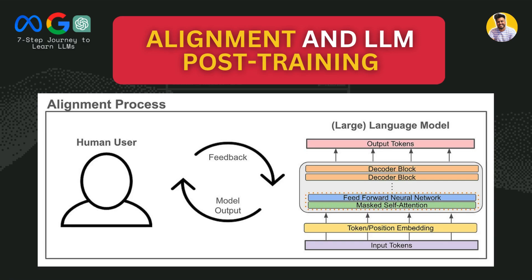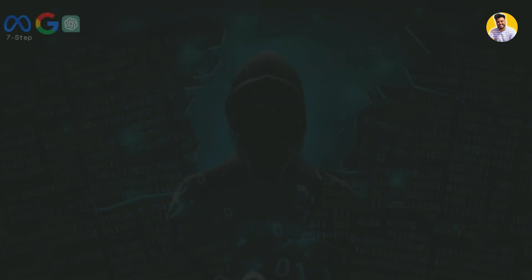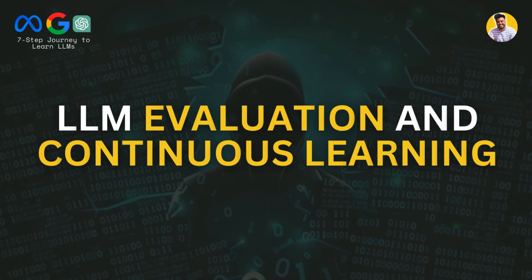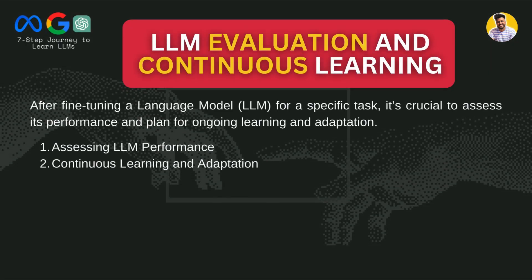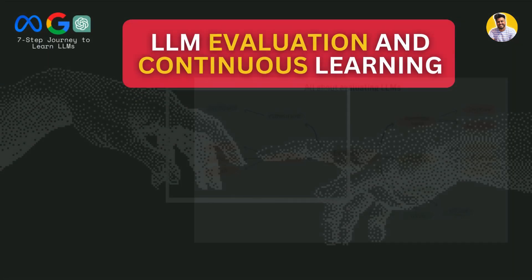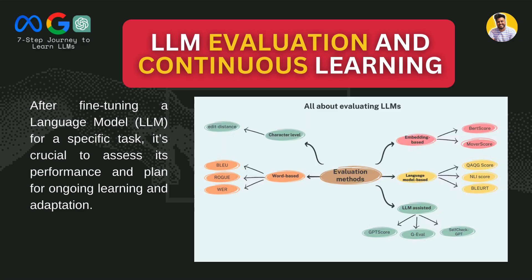The next step is how to evaluate and do continuous learning on large language models. Since large language models are built for specific tasks, it is crucial to assess their performance and plan for ongoing learning and adaptation, which requires enormous resources. After fine-tuning, evaluation is based on your specific task. If your LLM is embedding-based, you can use BERTScore or Word Score. If it is word-based, you can use BLEU or WER. Character-level and LM-assisted evaluation scores are also available.